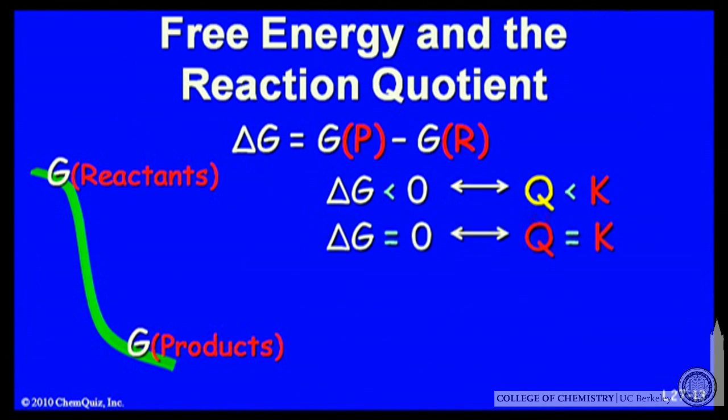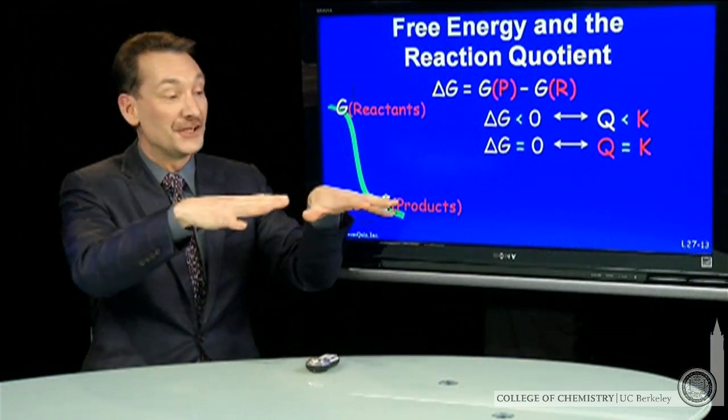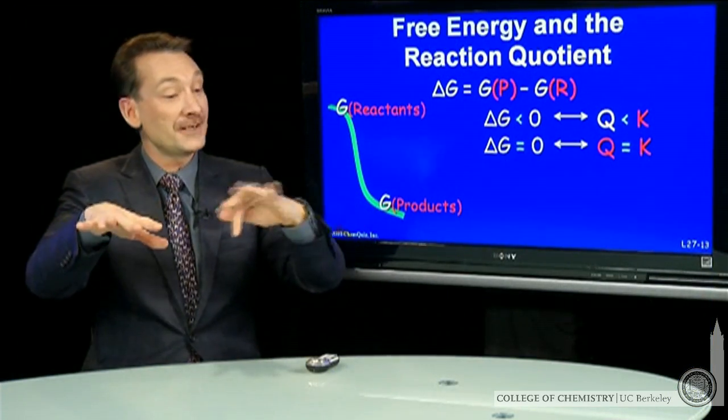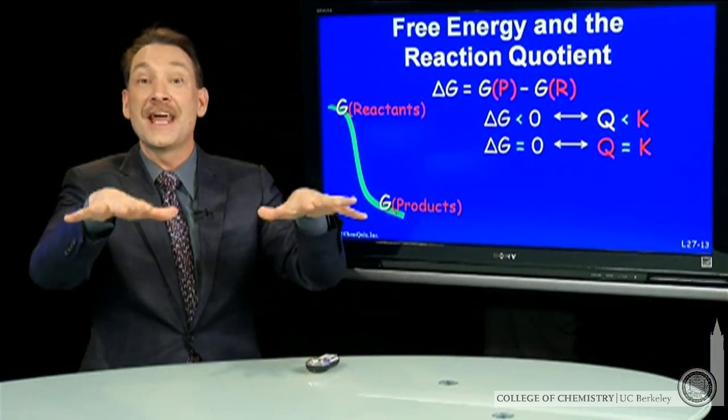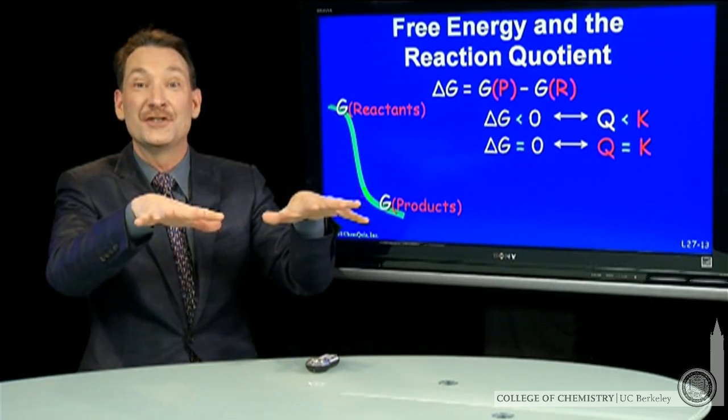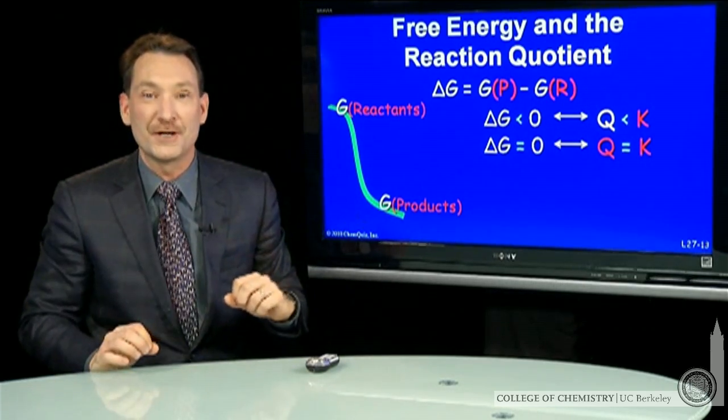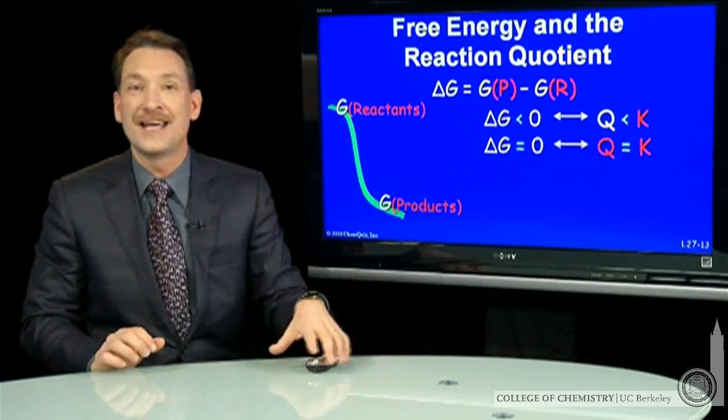If I look at delta G equals zero, that's the equilibrium situation, and that's where Q equals K, where my concentrations are such that they're not going to change. The playing field has been leveled. The free energy of the products, the free energy of the reactants are the same. I can interchange between the two. The macroscopic properties won't change. Q and K are the same.